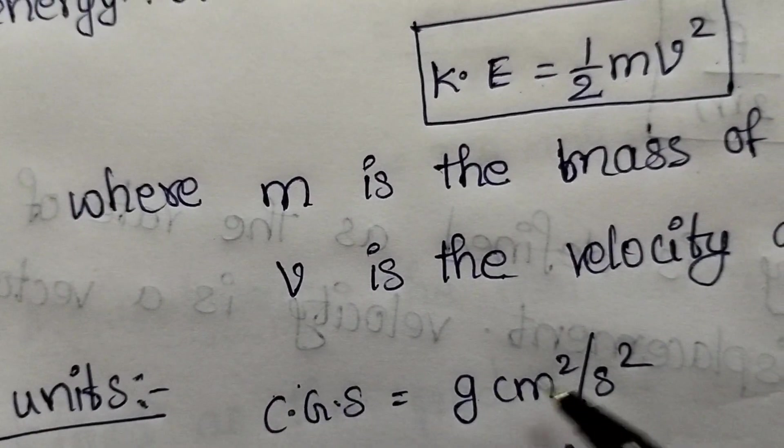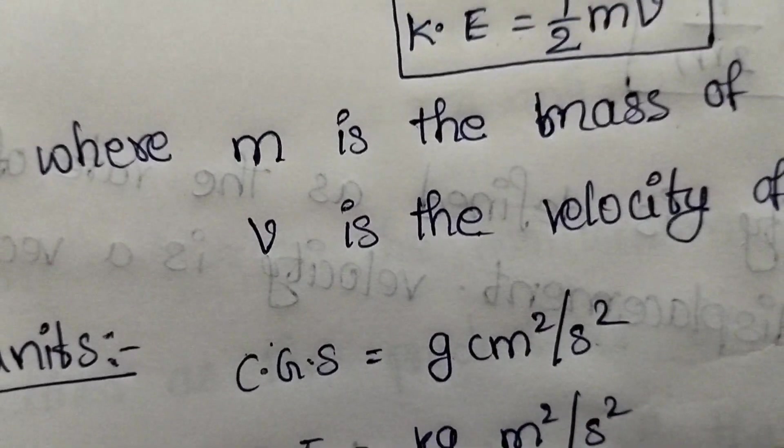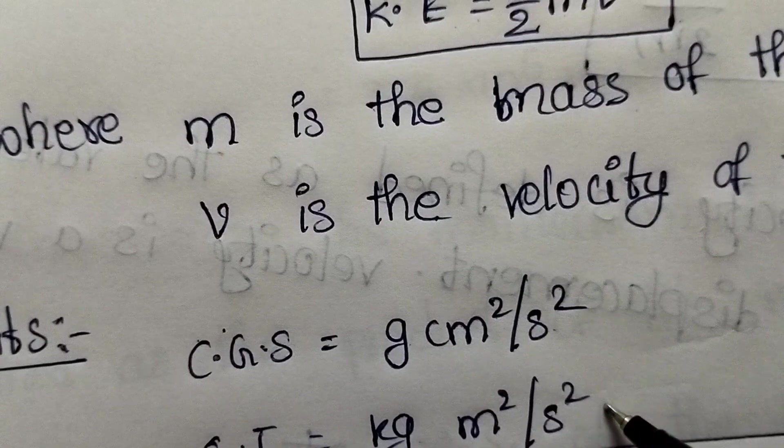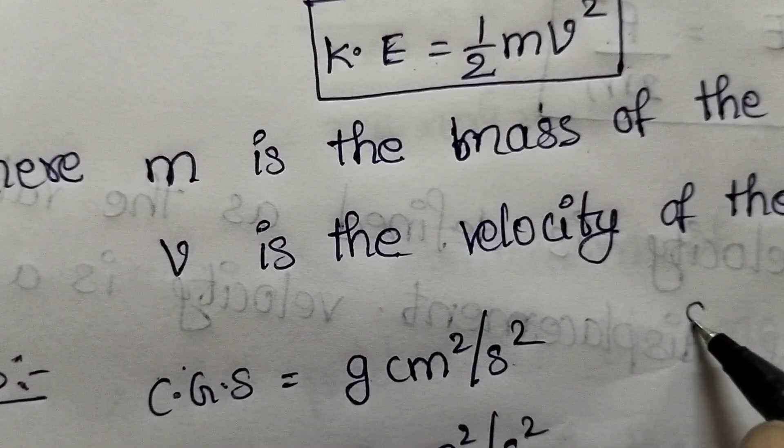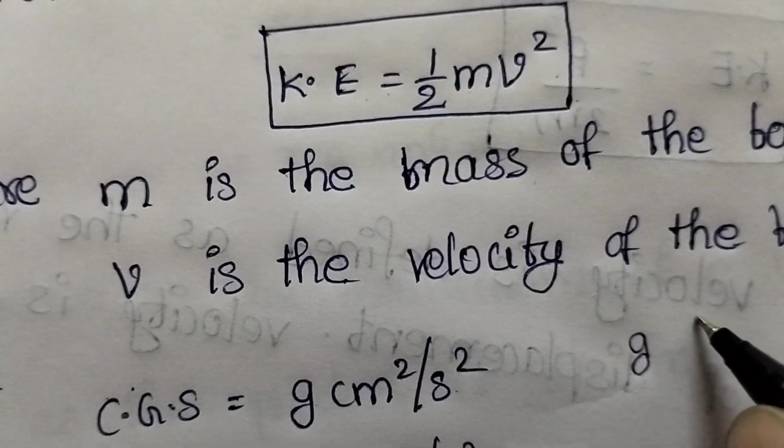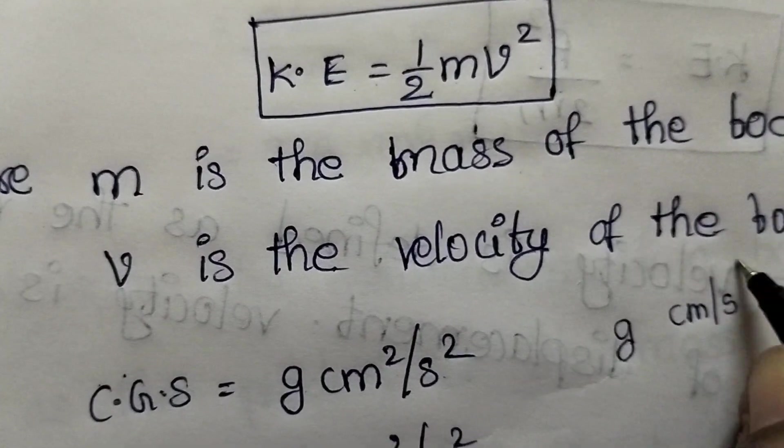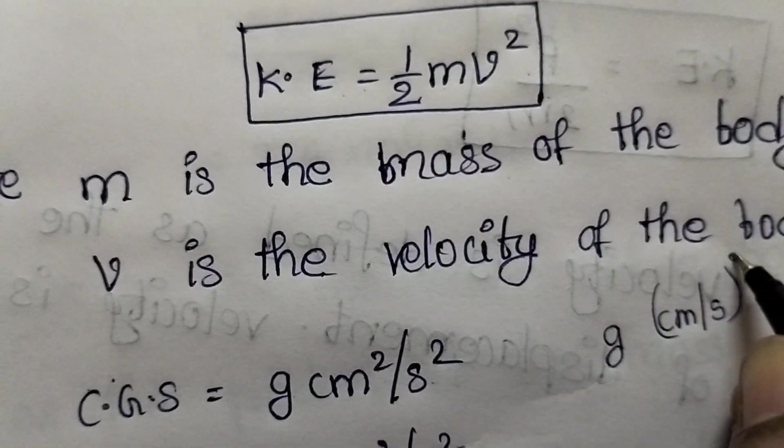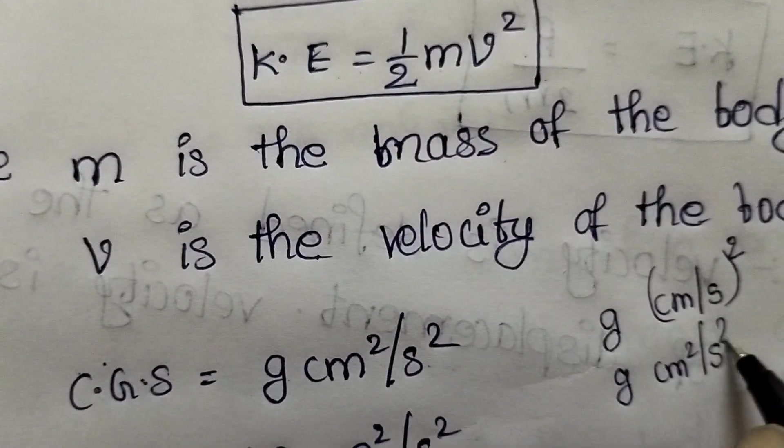The CGS unit is gram centimeter square per second square. See that here mass is in CGS system in grams, and velocity in CGS system has units of centimeter per second, whole square. This can be written as gram centimeter square per second square.